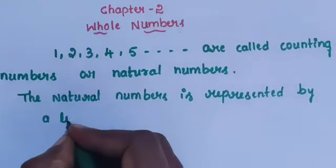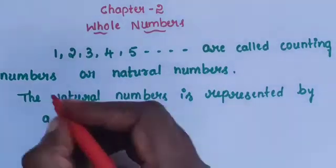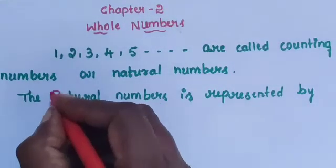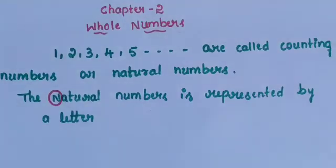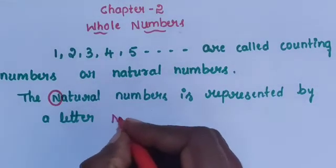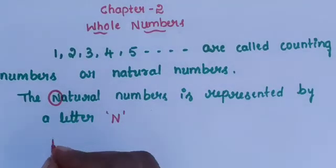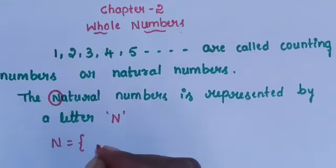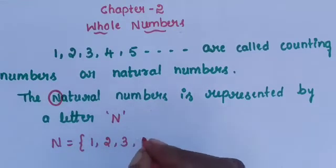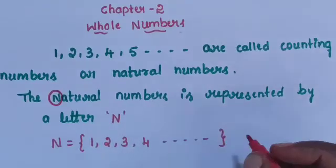The natural numbers are represented by the letter N. Then N is equal to 1, 2, 3, 4, up to etc.